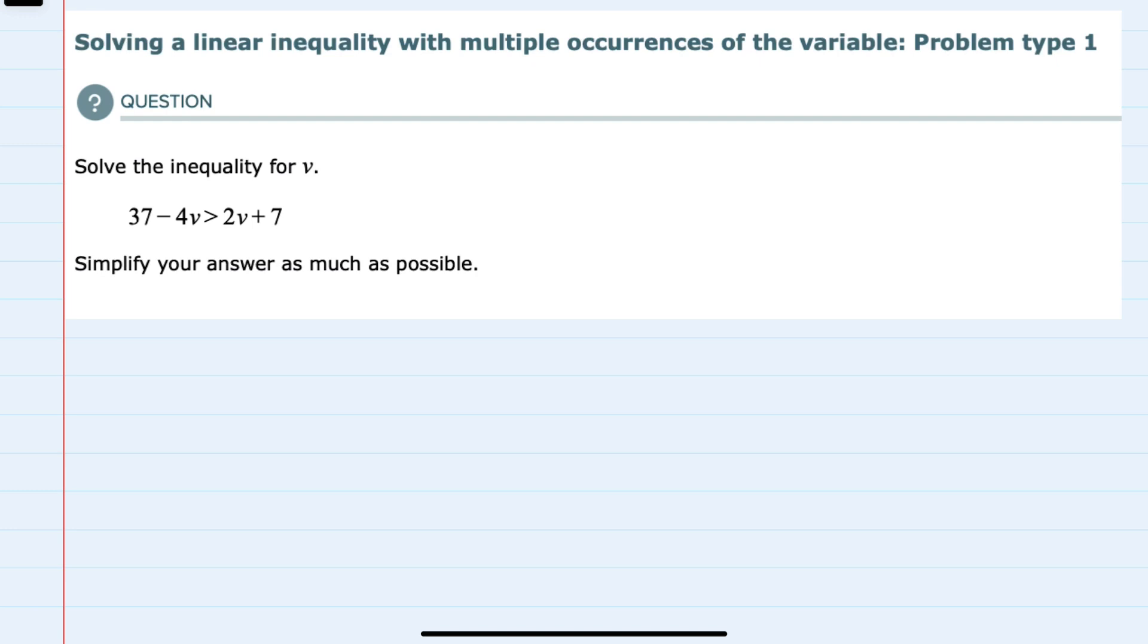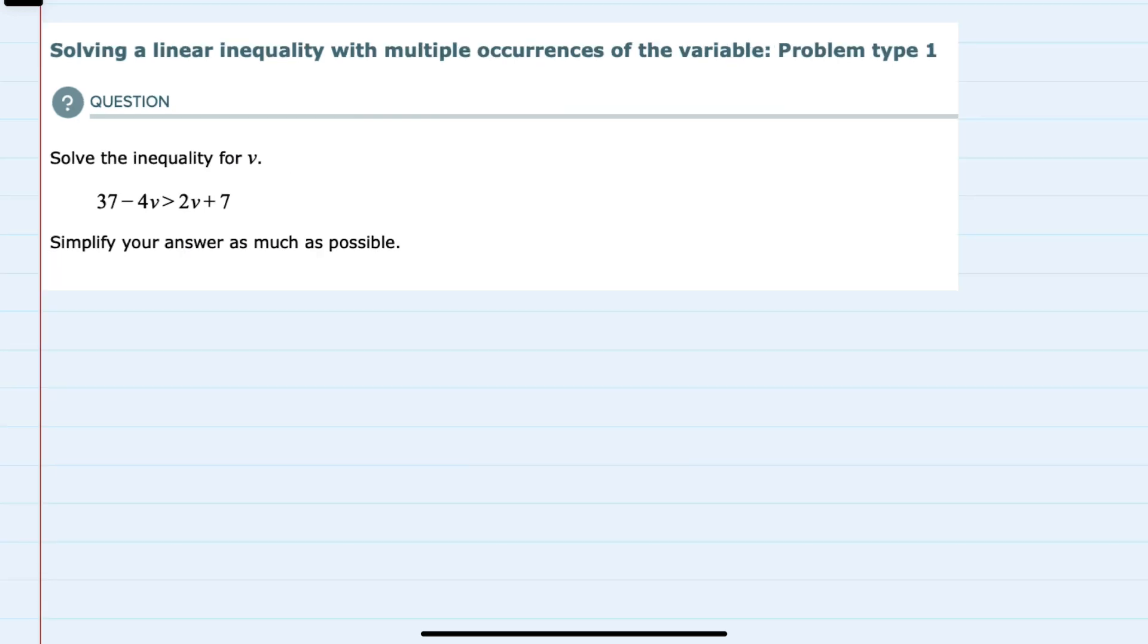We're asked to solve this inequality for v, and we have both a v on the left-hand side and the right-hand side of the inequality. So rewriting to give myself more room, my goal will be to isolate the v, but since I have v's on both sides,